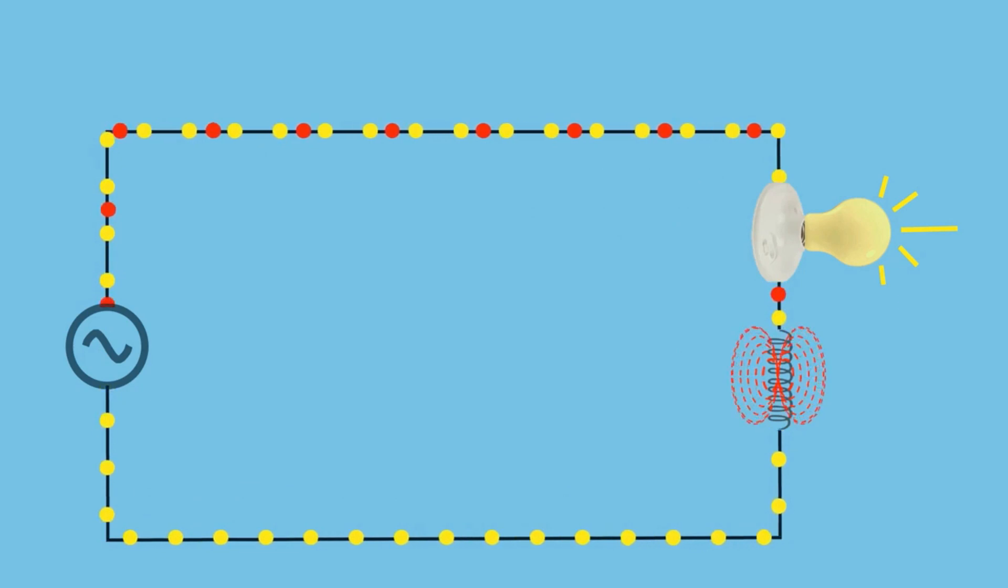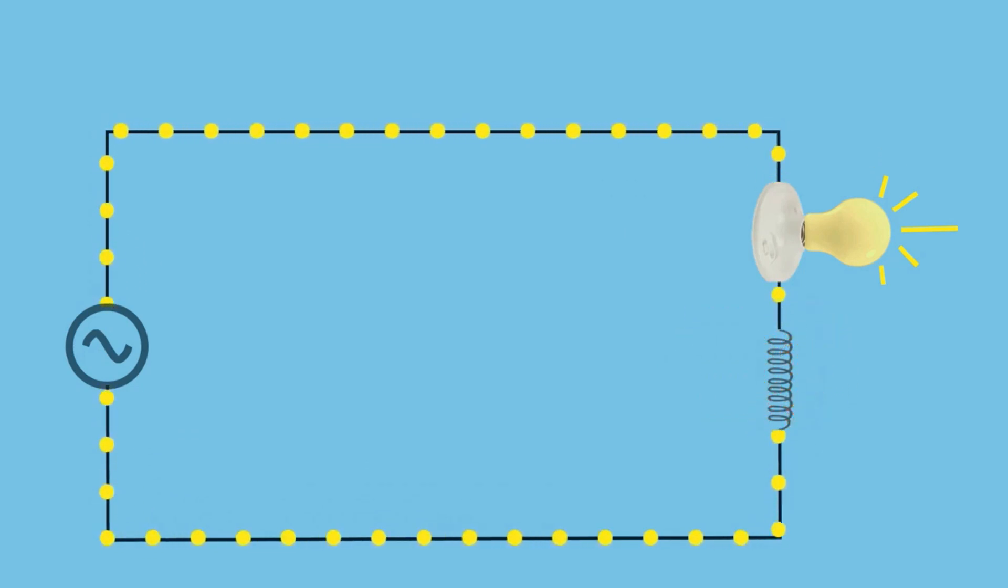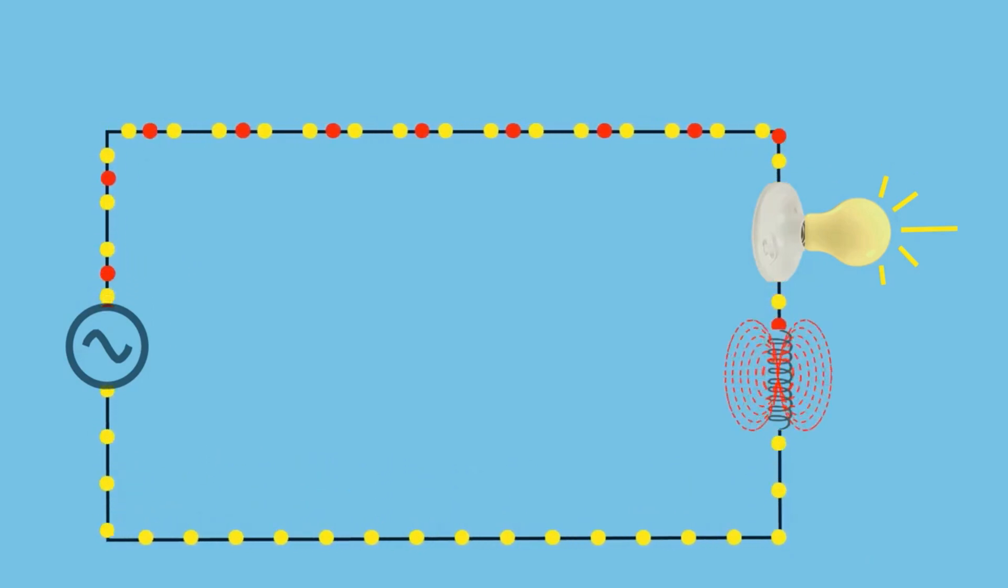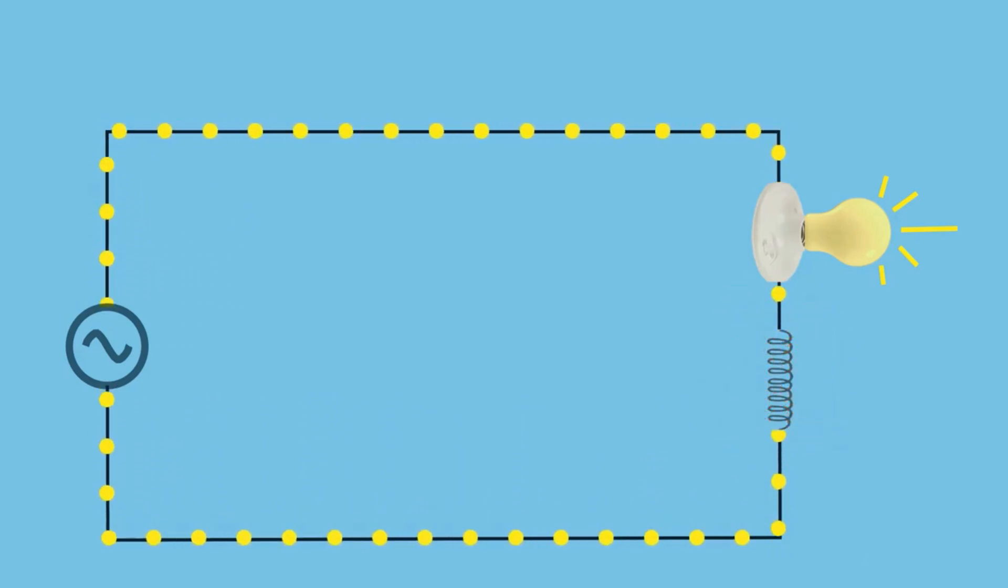Notice how the yellow dots pause during the negative power cycle while the red dots surge back to the power source. This illustrates the phase shift caused by the inductor. The alternating behavior of active and reactive power is a key factor in understanding power factor and circuit efficiency.